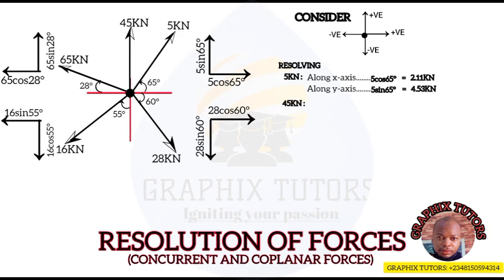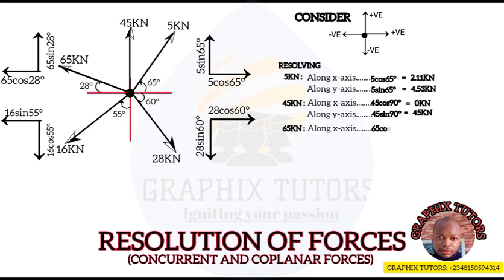For the 45 kilonewton: along the x-axis, 45 cos 90 = 0 kilonewton; along the y-axis, 45 sin 90 = 45 kilonewton. For the 65 kilonewton: along the x-axis, 65 cos 28 = −57.39 kilonewton (negative because it faces west/left); along the y-axis, 65 sin 28 = 30.52 kilonewton.